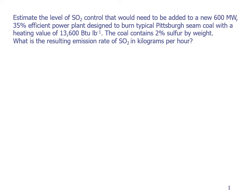We're going to look at this problem involving the emissions and control of SO2 from a power plant. The problem is to estimate the level of SO2 control that would need to be added to a new 600 megawatt, 35% efficient power plant designed to burn typical Pittsburgh seam coal with a heating value of 13,600 BTU per pound. The coal contains 2% sulfur by weight. The second part of the problem is to figure out what is the resulting emission rate of SO2 in kilograms per hour.